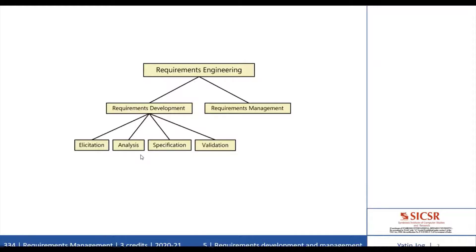Now I will talk about requirements development. Requirements development is subdivided into multiple parts like elicitation, analysis, specification and validation. These sub-disciplines encompass all the activities involved with exploring, evaluating, documenting and confirming the requirements for a product. Now we will look at all these activities one by one.